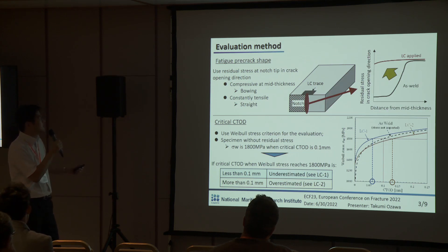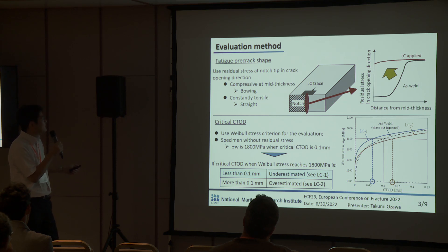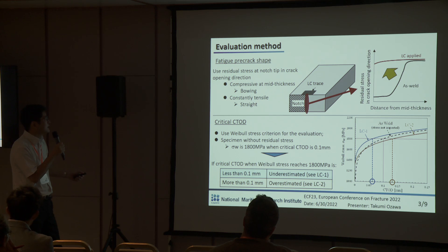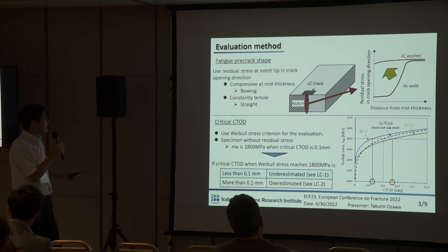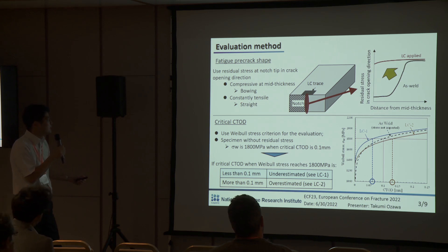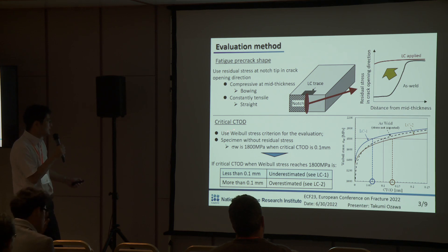This slide shows the evaluation method for fatigue pre-crack shape and critical CTOD. For fatigue pre-crack shape, we use the residual stress at the notch tip in the crack opening direction. If the residual stress is compressive through the thickness, like the black line in the right figure, we estimate that the fatigue pre-crack shape is bowing. If it is constantly tensile, like the red line, we estimate that the fatigue pre-crack shape is straight.